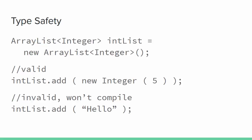So if I declare ArrayList of Integers IntList equals a new ArrayList of Integers, I'm allowed to add to that IntList a new integer of value 5, but IntList.add("hello") would not compile.